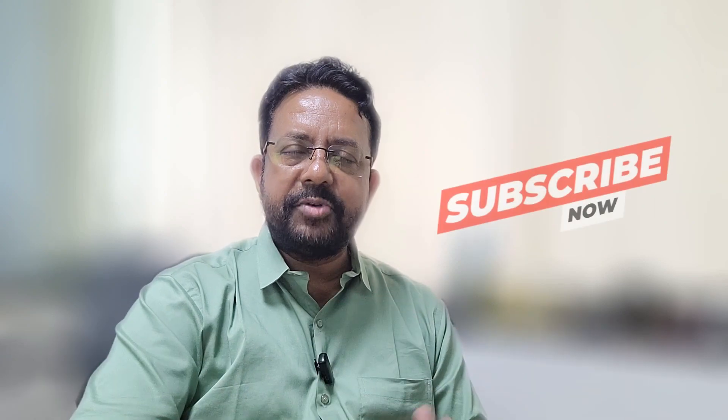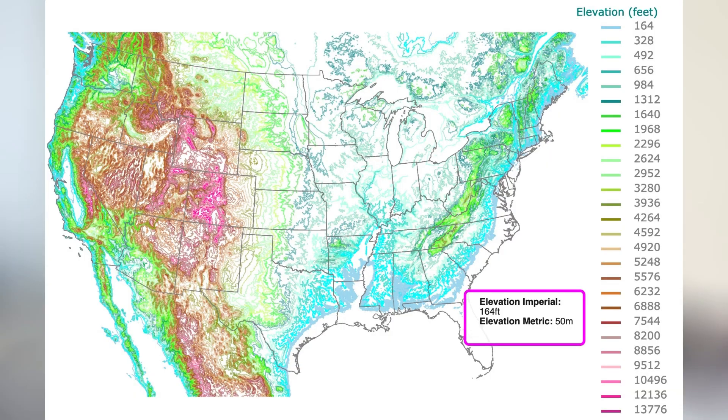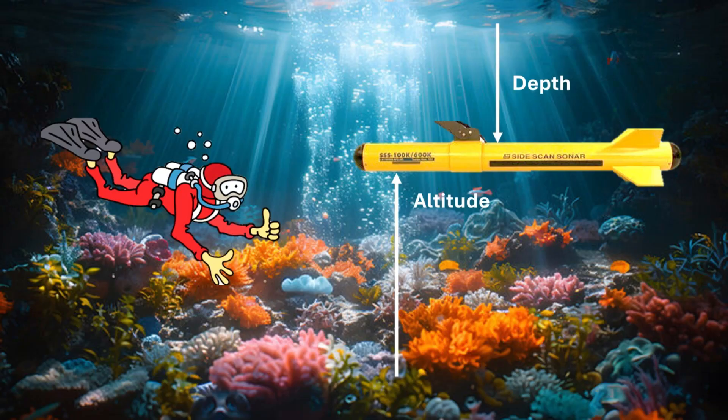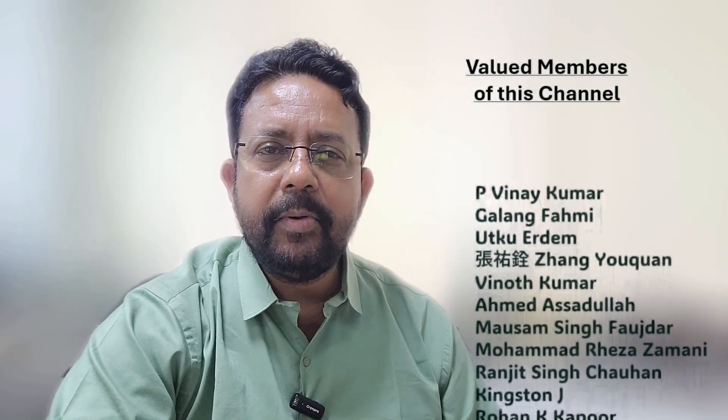You need a good reliable GNSS system and a precise terrain map, but make sure whether the terrain map is showing ellipsoidal height or orthometric height, because there can be a huge difference between them. And in case you were wondering — the height of a side-scan sonar towfish, ROV, or diver from the immediate seabed below is also called altitude.